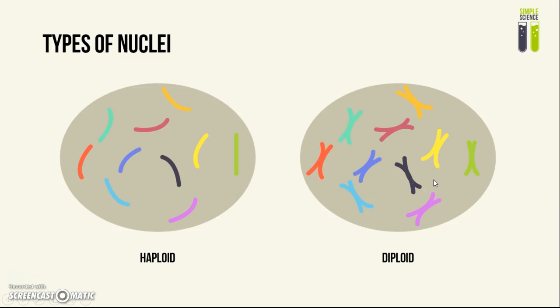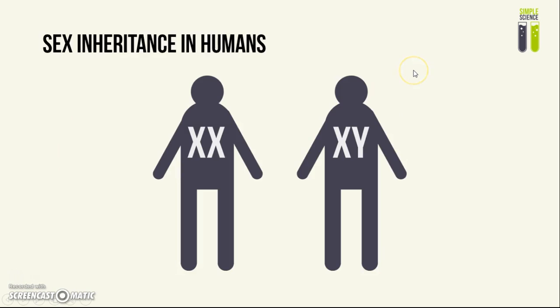In humans, in our diploid cells, we have 23 pairs of chromosomes, so this means that we have 46 single chromosomes in total, if you just do the math.